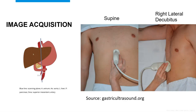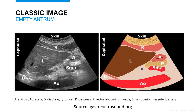To acquire the image, you find the xiphoid process with one hand and place the probe just distal to that. The probe should be oriented in the sagittal plane with the orientation marker pointed cephalad. For gastric ultrasound, we assess the gastric volume and contents in both supine and right lateral decubitus positions. In the image, we can appreciate the liver cephalad, the antrum just distal to the liver, the pancreas deep to the antrum, the superior mesenteric artery deep to the pancreas, and the aorta deep to that. All assessments are performed at the antrum.